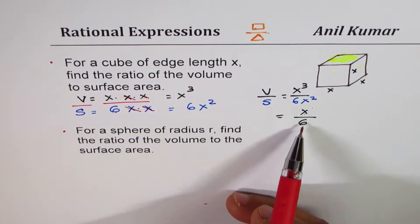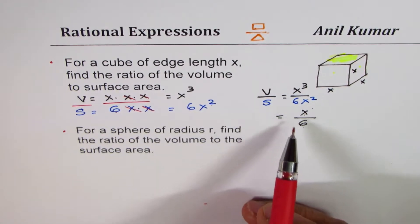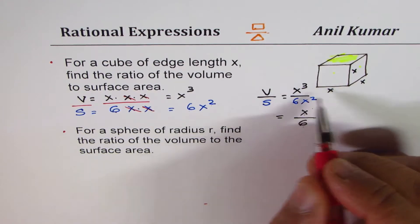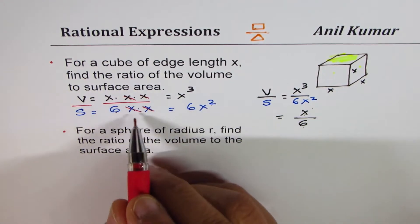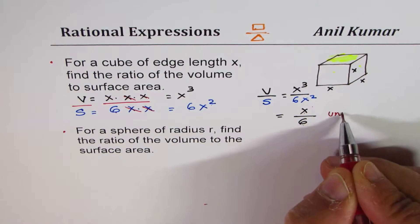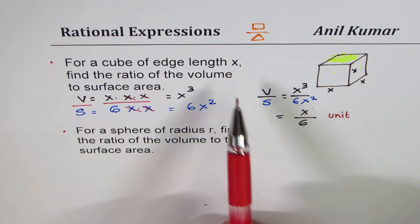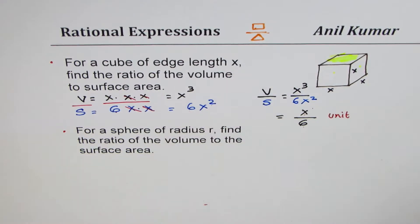So that becomes the ratio. Now units will be, for cube there are three x's, for area there are two, so it'll be in units. Any unit, if x was in meters it'd be meters, if x was in centimeters this will be centimeters.